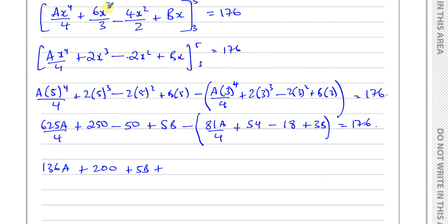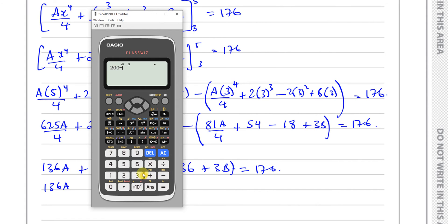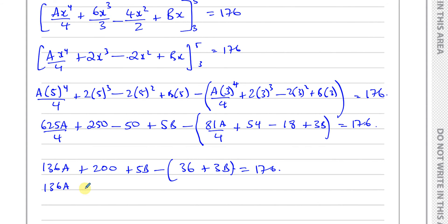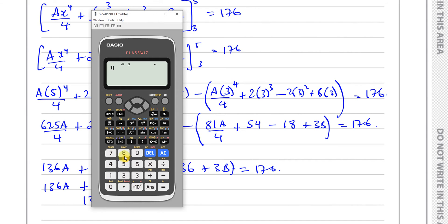Now, 5⁴ is 625, so 625a over 4. 5³ is 125, 125 times 2 is 250. 5² is 25, 25 times 2 is 50. This is 5b minus, 3⁴ is 81, so this is 81a over 4. 3³ is 27, 27 times 2 is 54, minus 2 times 9 which is 18, plus 3b. And that's equal to 176.